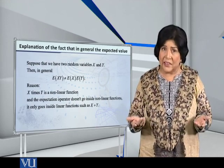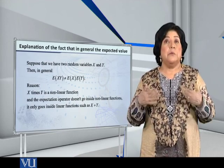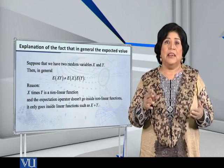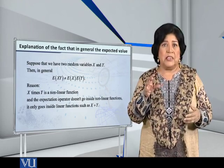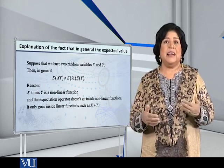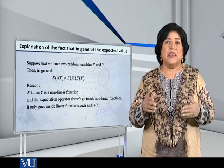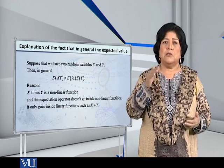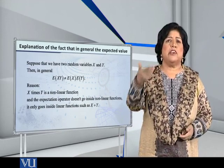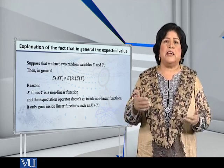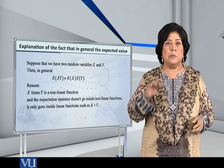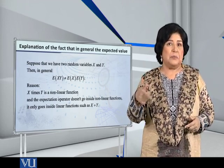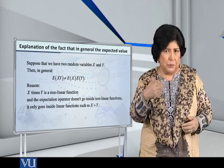You may be surprised because you know that the expected value of x plus y is equal to the expected value of x plus the expected value of y. The question is: why does that same equation not hold when multiplying instead of adding? The reason is that x times y is no longer a linear function. When you do x plus y, linearity — the power of 1 — is preserved. But when you do x times y, the powers multiply and you get power 2.